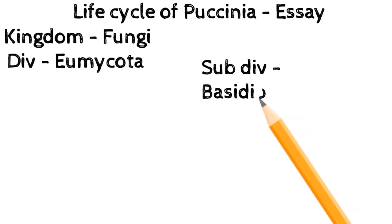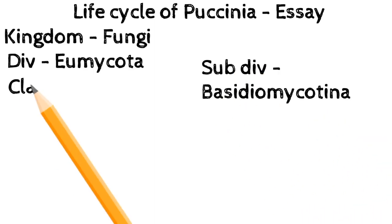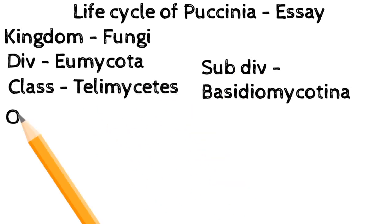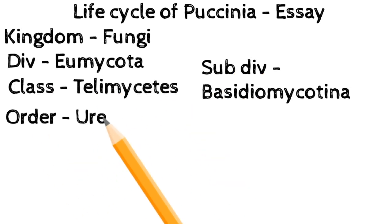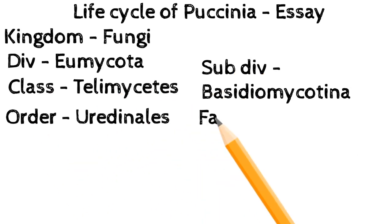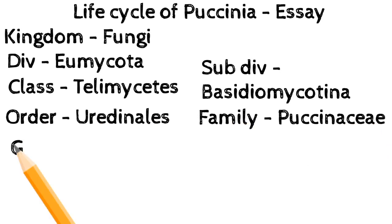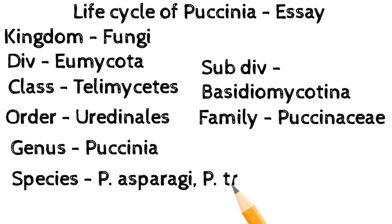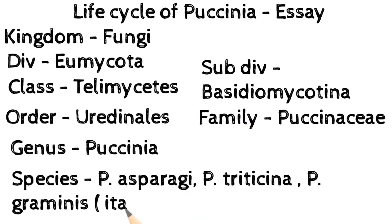Kingdom: Fungi. Division: Uredinomycota. Sub-division: Basidiomycotina. Class: Teliomycetes. Order: Uredinales. Family: Pucciniaceae. Genus: Puccinia. Species: Puccinia asparagi, Puccinia triticina, Puccinia graminis italica, and so on.